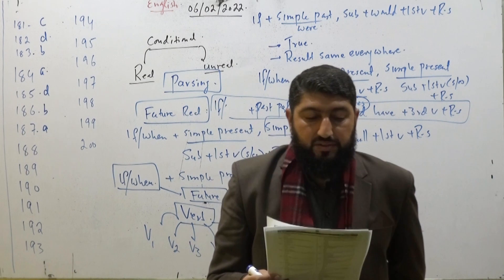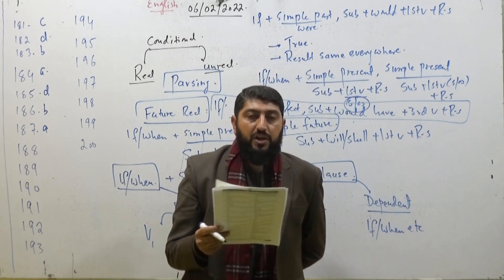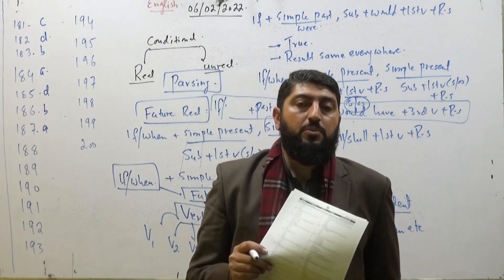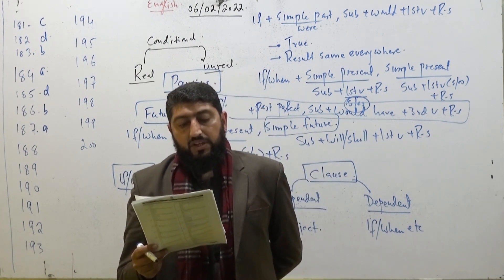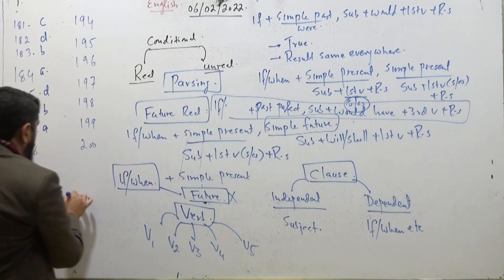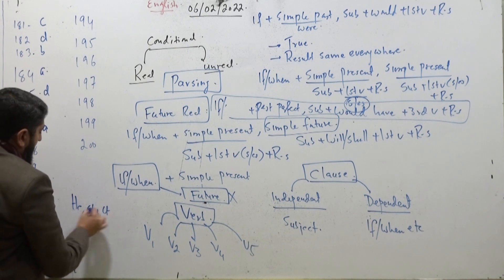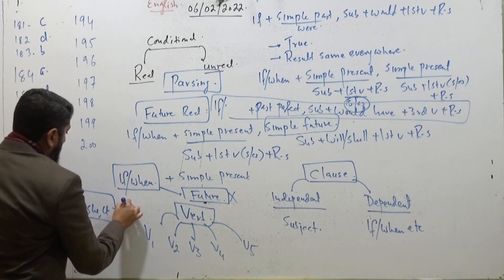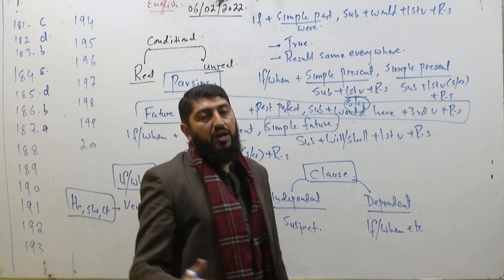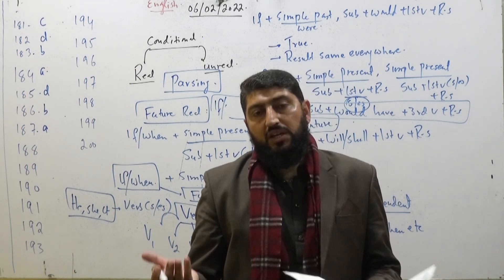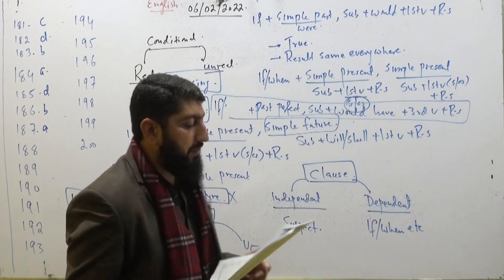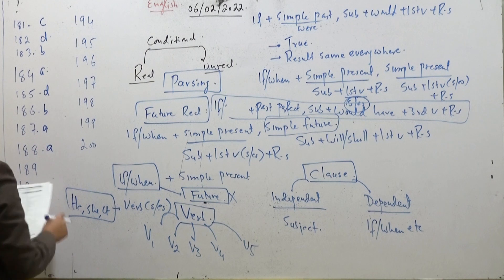MCQ 188: 'Dash, you cannot pass.' Again, since there is a reference to future and we have a subordinating conjunction, we cannot use will/shall — so options C and D are eliminated. Also, when the subject is he/she/it, you must use s/es with the verb; with other pronouns use the first form of verb alone. So option number A is the correct one.